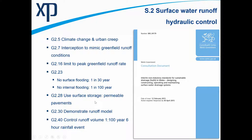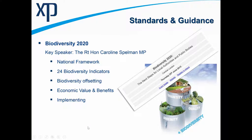We need to limit the peak discharge off site to the greenfield runoff rates. Make sure there's no flooding for the 30-year return period. Make sure no property is flooded and no threshold is breached for the 100-year event. Keep the flooding within the confines of the site. Use surface storage — this is the cheaper option — and they specifically mention permeable pavements for high-density areas. We also need to demonstrate a runoff model, controlling not just the peak discharge rates but the runoff volume to the 100-year, 6-hour event.